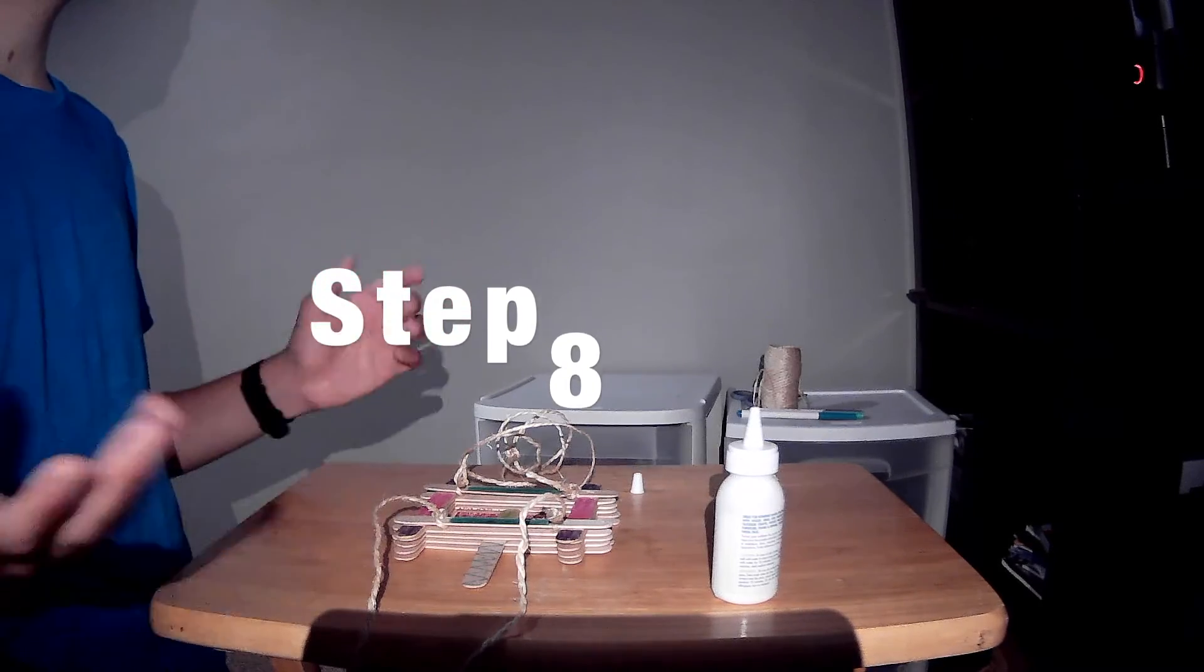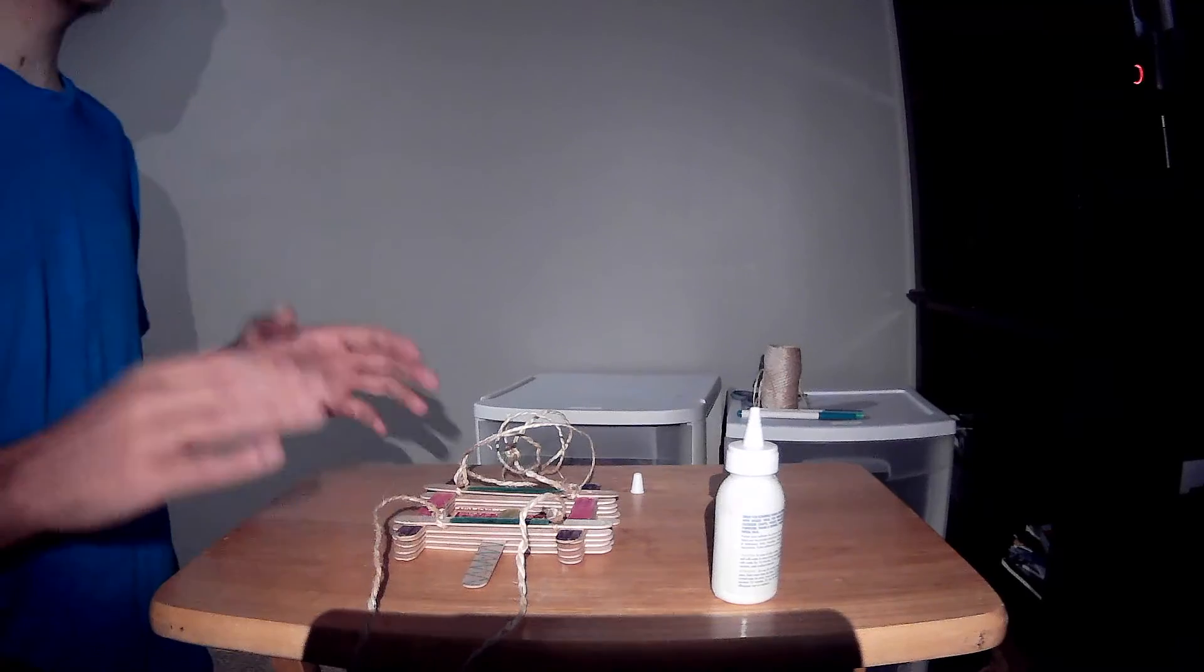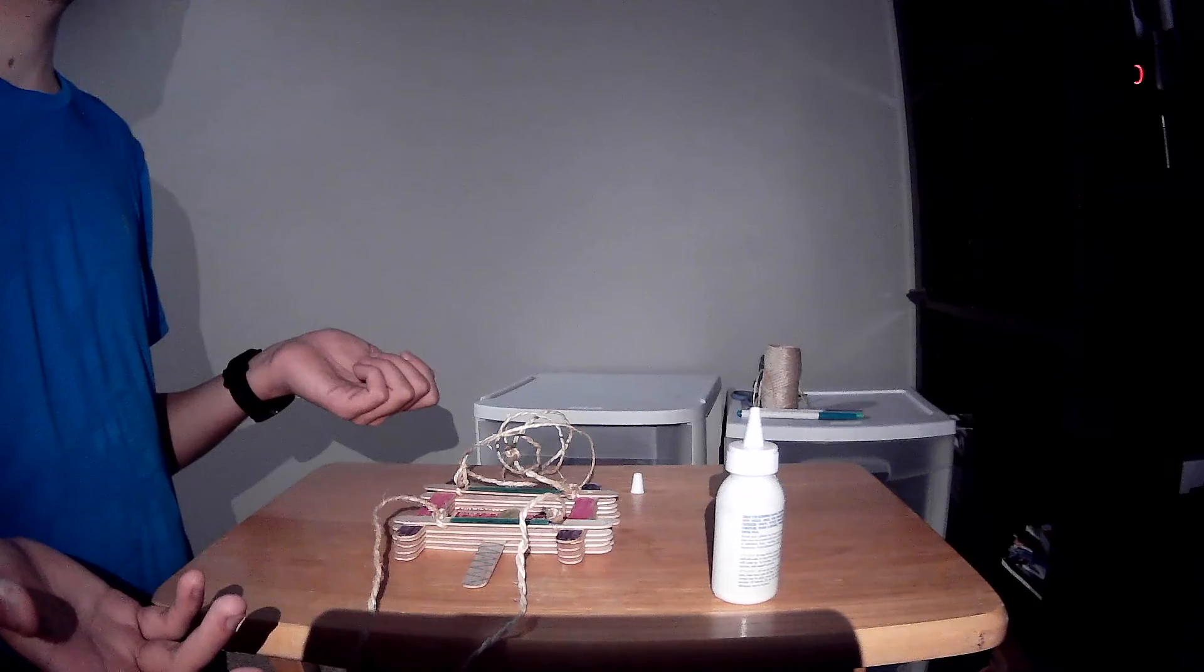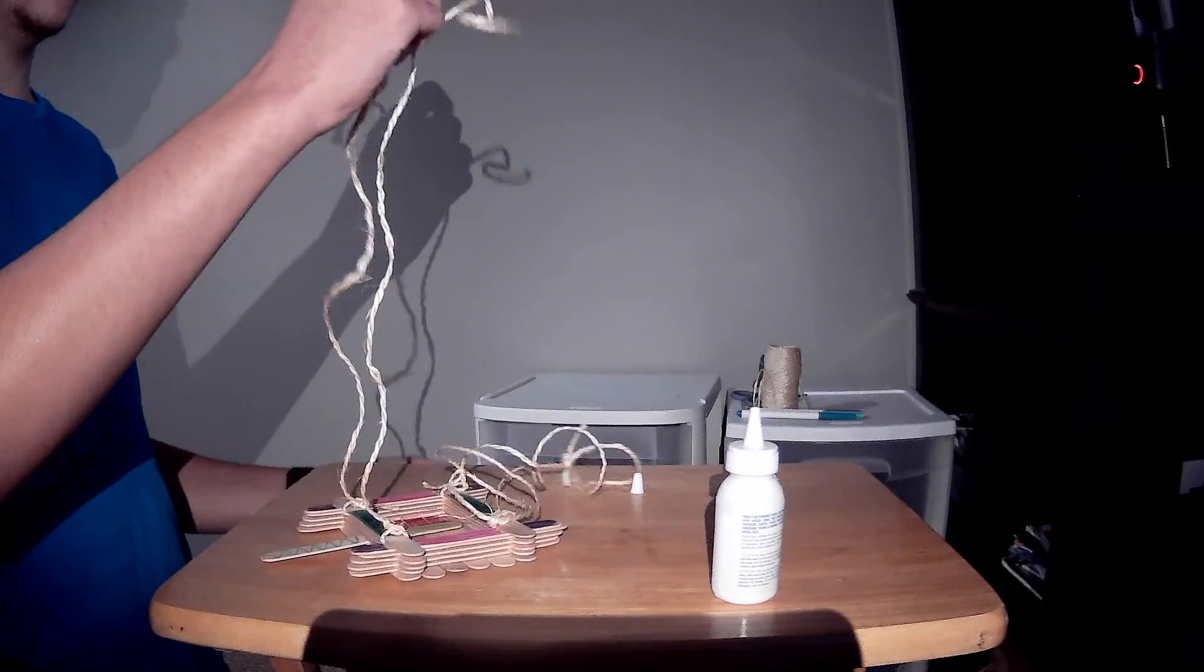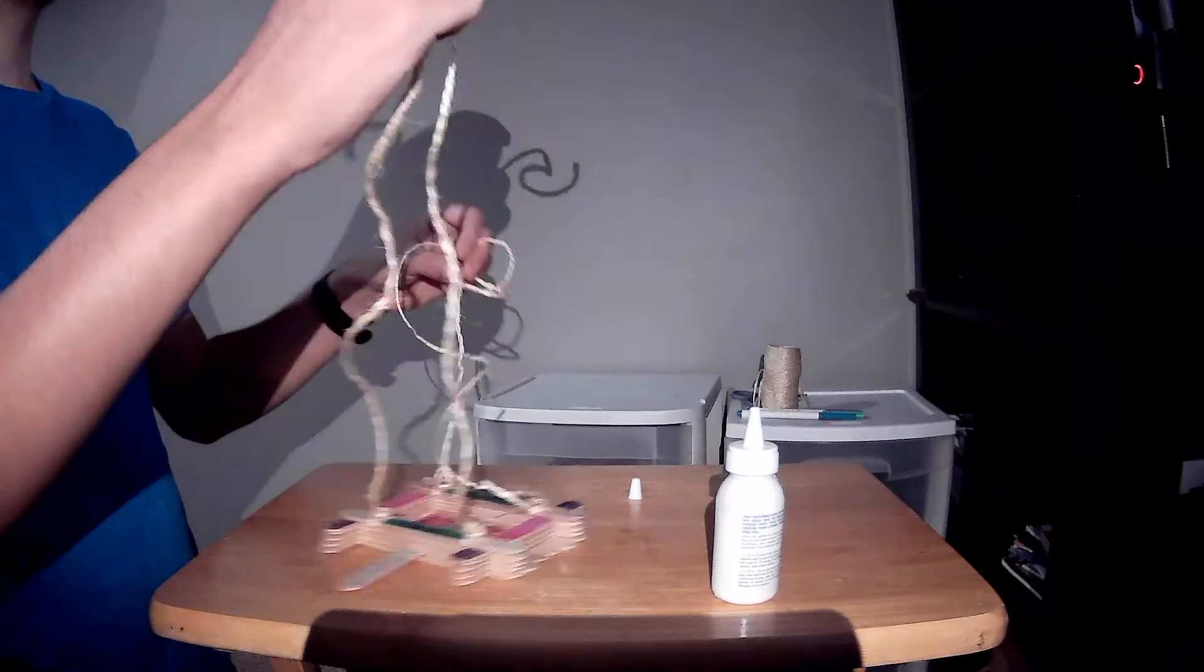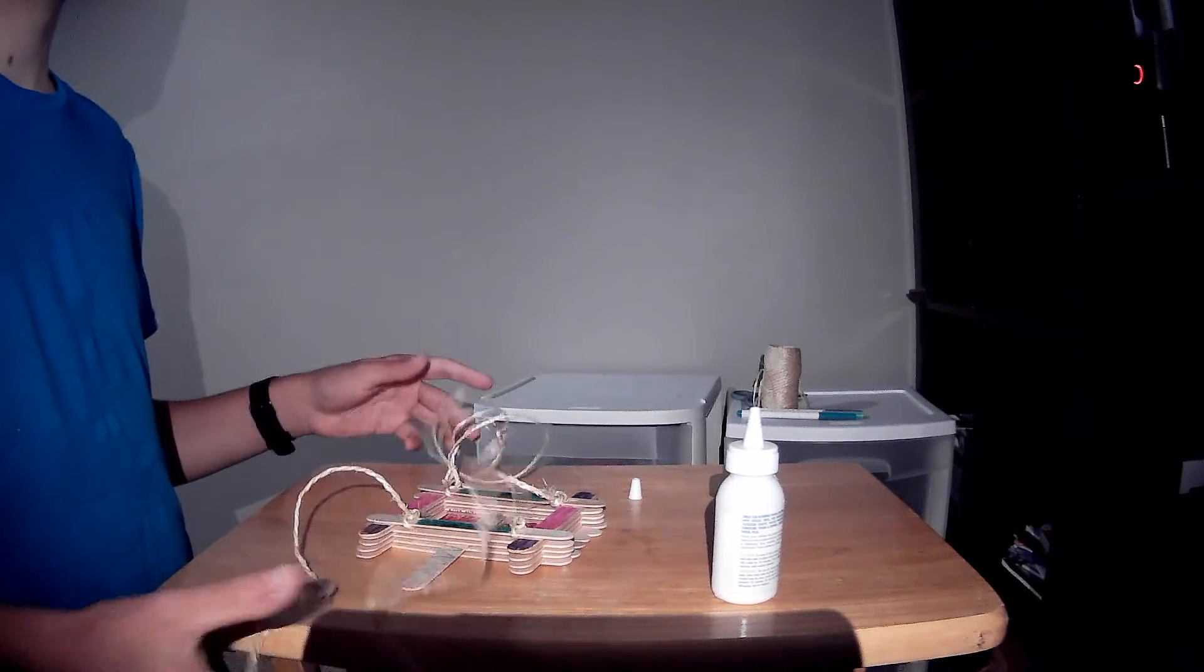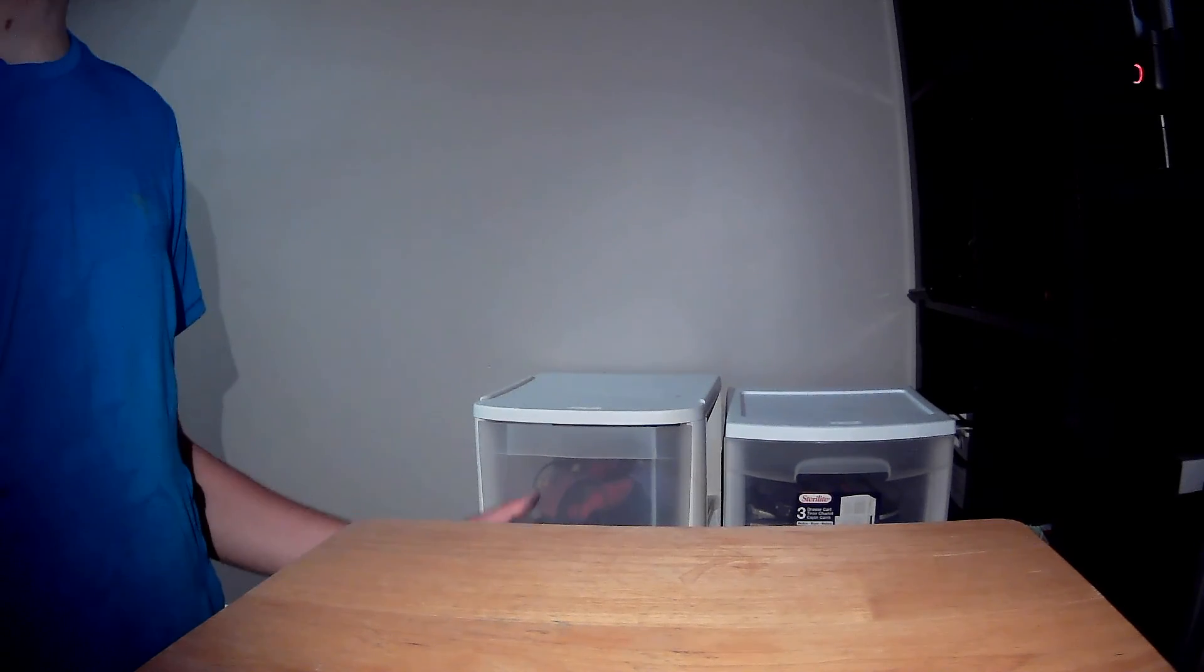Now on to step eight. Inside of your bird feeder, you want to put bird seed. Remember, you want to make sure that it's completely dry before you put it outside. Then you can hang it up outside with the loops, and you're ready to go to enjoy watching the birds. Did you guys have fun? I know I did. I hope you enjoyed making the bird feeder with me today. Take care, everyone.